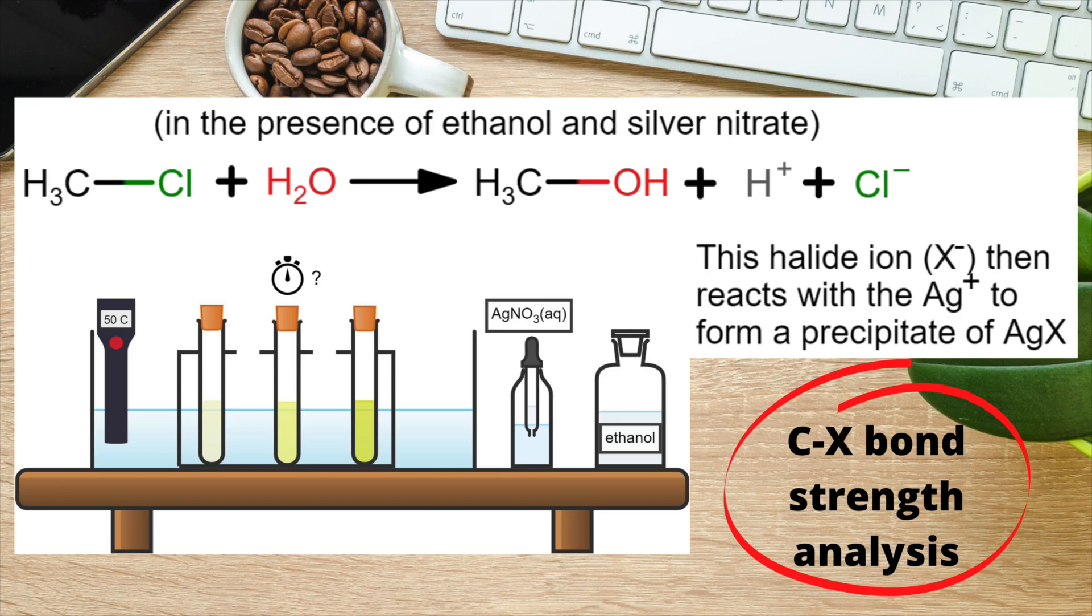Now, whilst this reaction does technically show the haloalkane functional group changing to an alcohol, we would absolutely not suggest this setup as a way of targeting this kind of functional group change. Let's have a look at what reagents and conditions I would suggest if I wanted to convert the carbon-halogen bond to an alcohol functional group.